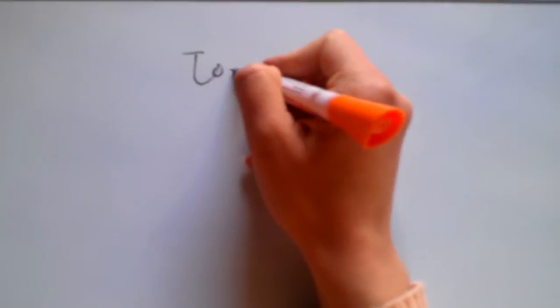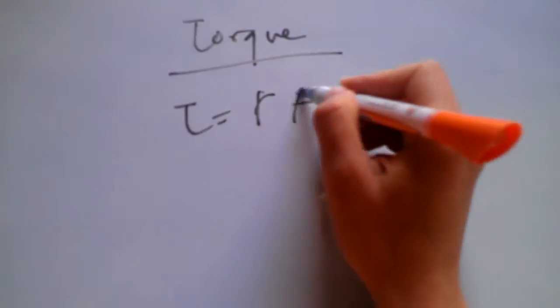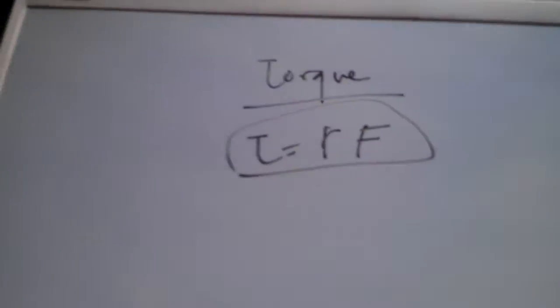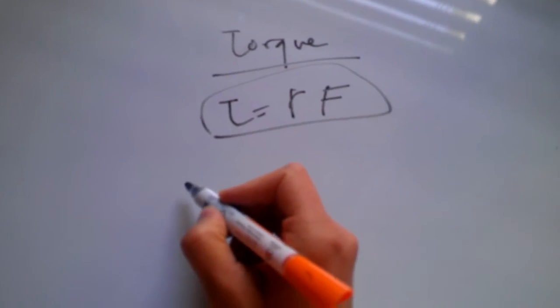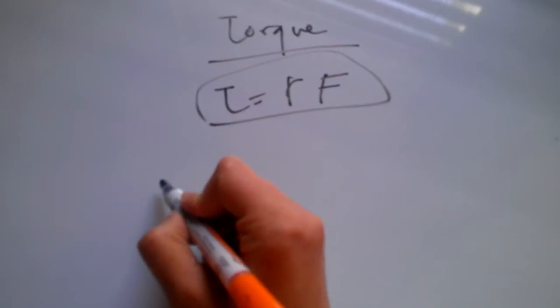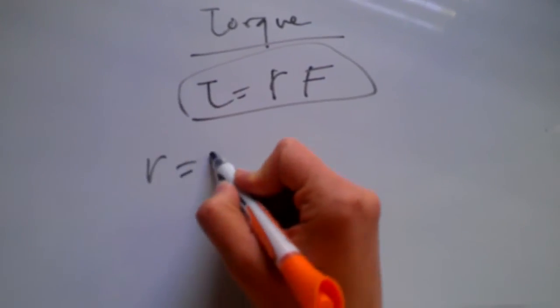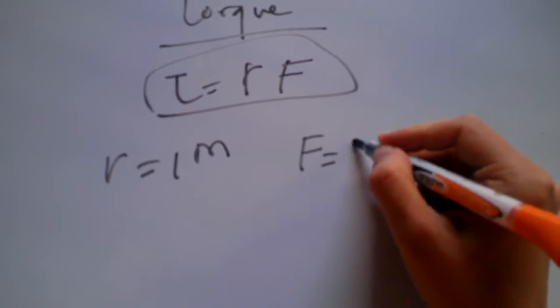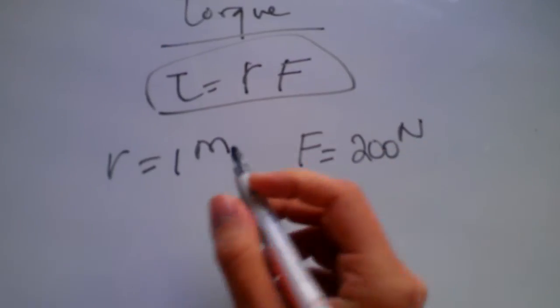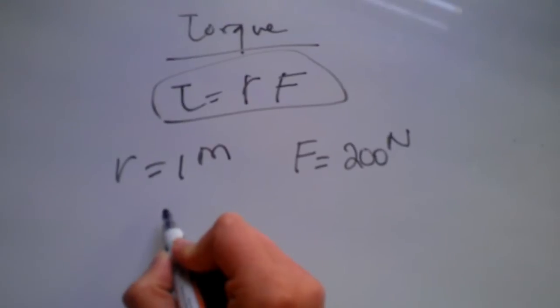Another problem is essentially dealing with torque. So we know torque is R times F, that's the definition for torque. So let's just do this one. Suppose a wrench has a handle that's about one meter long. If we exert a force of 200 newtons at one end of the handle, what would be the torque?